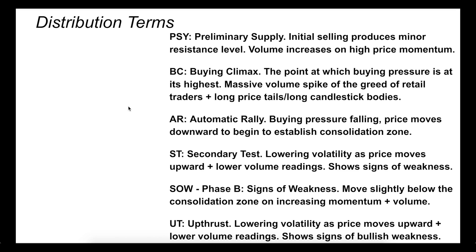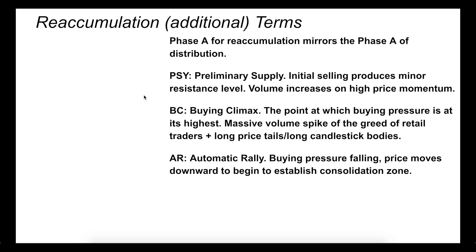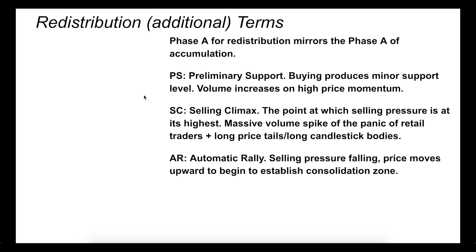Now these are some of the terms that we see with distribution. Those were both phases of accumulation and distribution where we get a reversal. This is what you're going to see when you get a continuation — an uptrend to consolidation, continued uptrend with reaccumulation. Redistribution: you're going to see a downtrend, consolidation, continued downtrend. Pause the video here if you want to study to your heart's content. Five phases — and what's the personality of each of these phases?